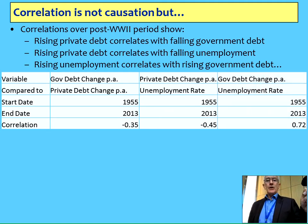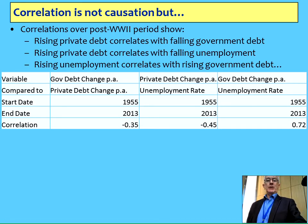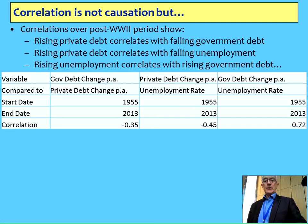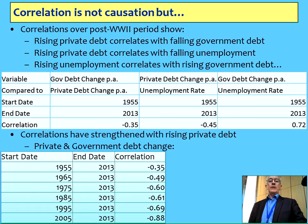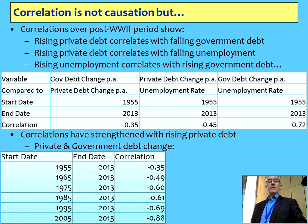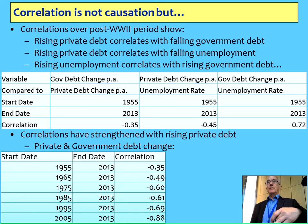Now looking at the correlation between change in government debt and change in private debt: over the entire period it's not a particularly large number — statistically significant, but not large — minus 0.35. The private debt to unemployment: minus 0.45. And the government debt to unemployment change: a fairly strong 0.72 for that 60-year period. But those correlations have strengthened over time. Looking at the private and government debt change relationship over time, from 1955 right through to now it's minus 0.35, but it rises almost monotonically: minus 0.49, minus 0.6, then minus 0.69, and finally minus 0.88. So there's now a very strong correlation between changing levels of private debt and changing levels of public debt, but they're moving in opposite directions.